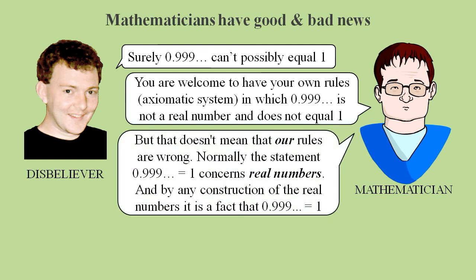The bad news, they will tell you, is that by default 0.9 recurring is a real number, and if you use the accepted rules of real analysis, then it is a provable fact that 0.9 recurring equals 1.